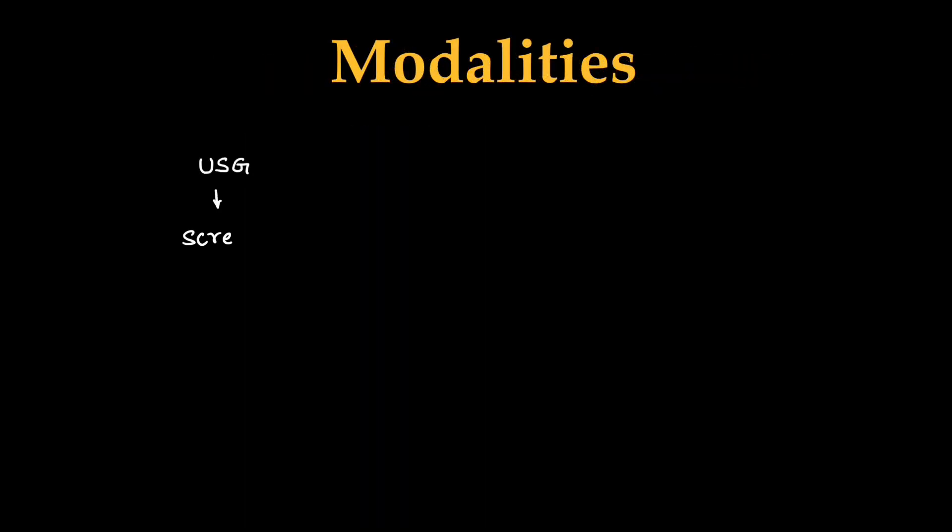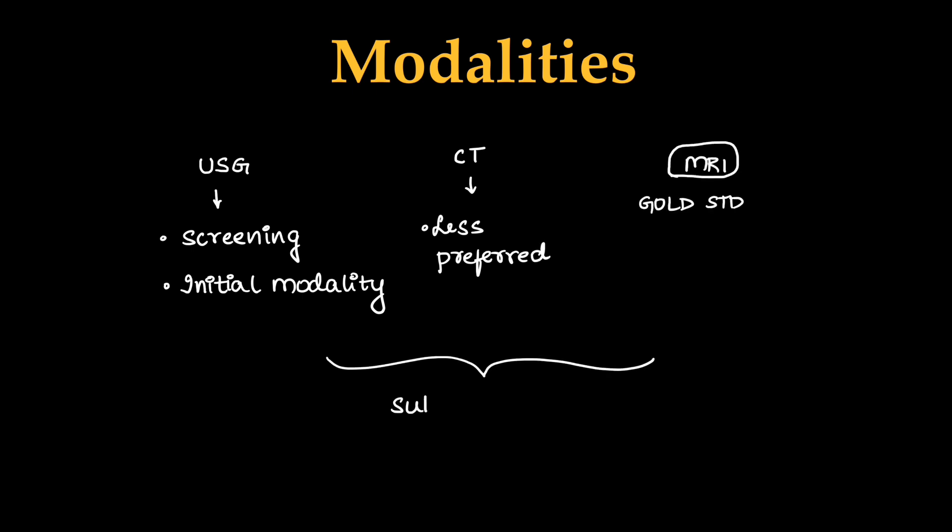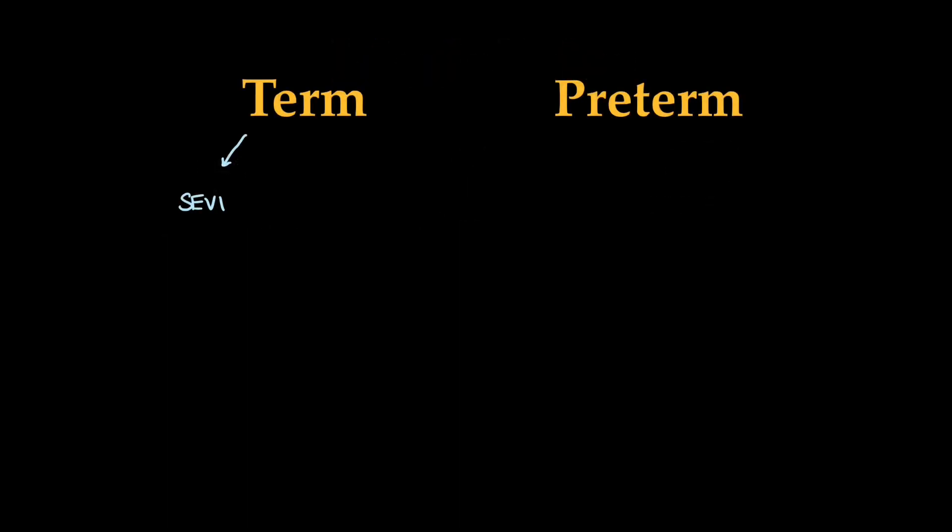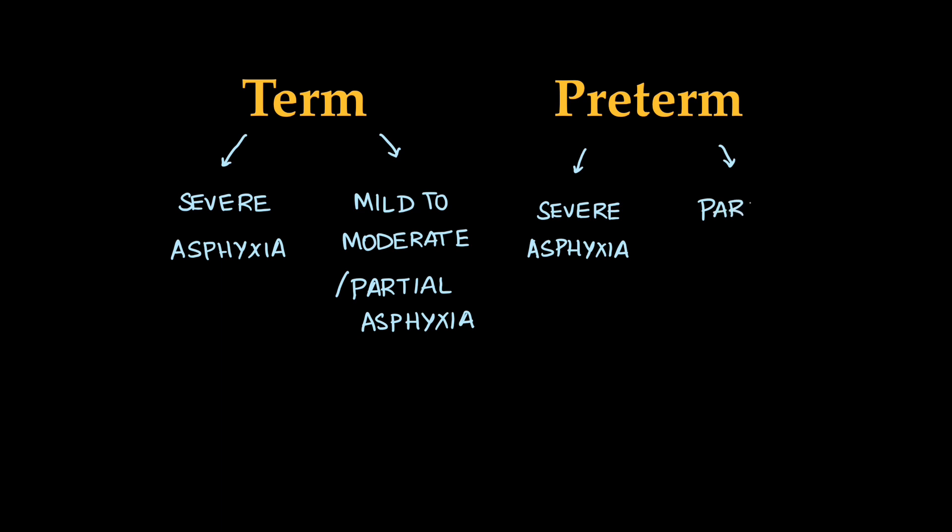Coming to imaging modalities, ultrasound is the screening or first modality to be used in NICUs. CT has less preference. MRI is the gold standard. All these show findings in sub-acute stages. Overall, in term neonates, asphyxia is divided into severe asphyxia and mild to moderate asphyxia, which show different imaging findings. In preterm also, severe asphyxia is different, and in partial asphyxia there are findings like intraventricular hemorrhage and periventricular leukomalacia, which is very important.